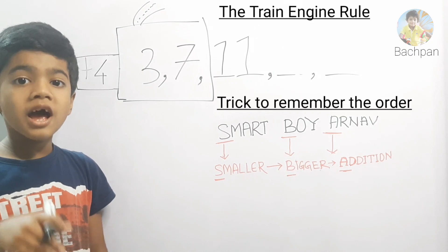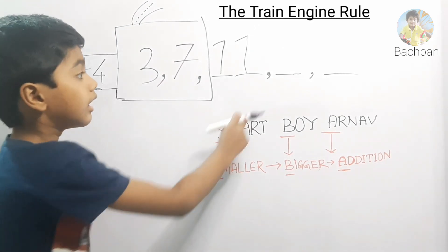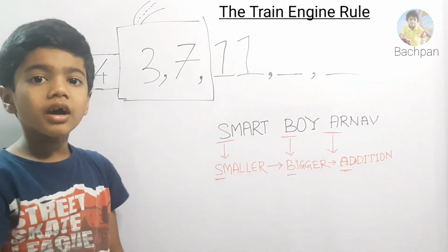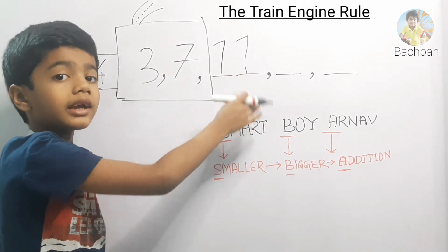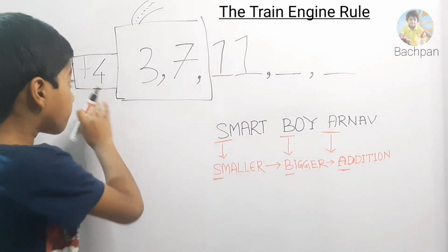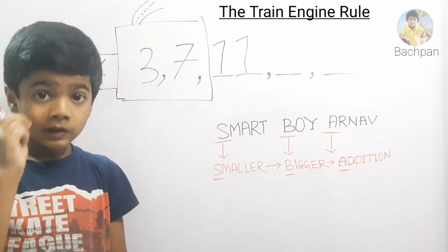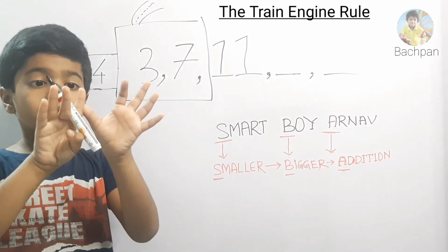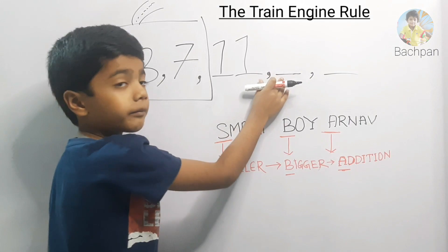Let's apply it. Let's go to the blank place. What is the number immediately to the left of the blank? 11. What is the pattern? Plus 4. Let's add: 11 plus 4. What is 11 plus 4? 12, 13, 14, 15. So write here 15.